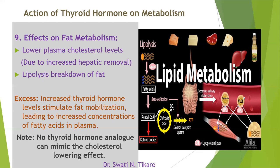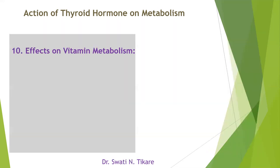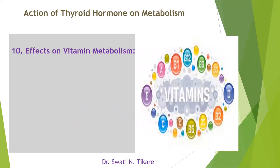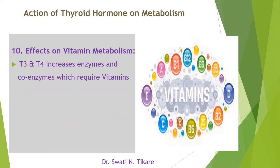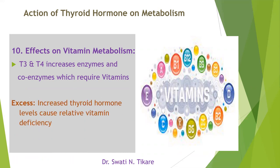For vitamin metabolism, thyroid hormones increase enzyme activity in all cells, so a lot of enzymes and coenzymes — which are made up of vitamins — are required and used up. If there is excess of thyroid hormone, vitamins are used up rapidly, resulting in a relative deficiency of vitamins.